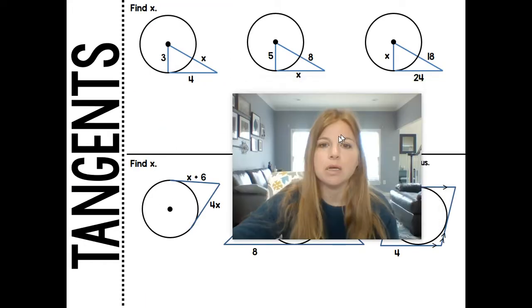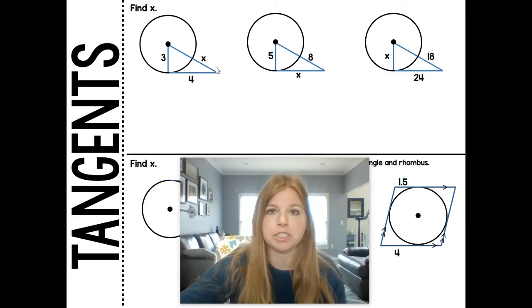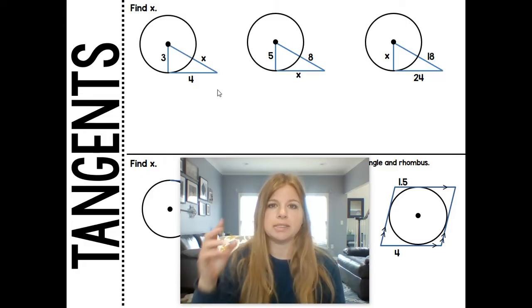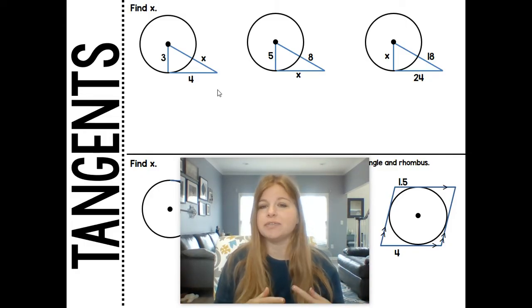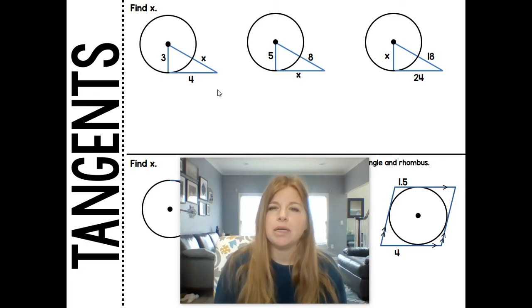So we need those two pieces of information to be able to do these following problems. Now, you'll notice I have the same diagram, but each one has different numbers in different spots. We're going to be solving for X. Notice X is in a different spot each time.